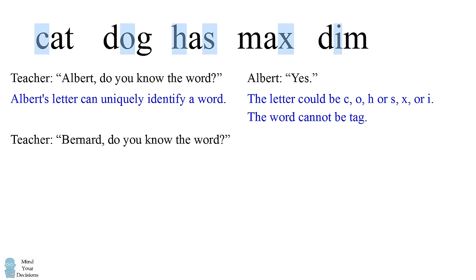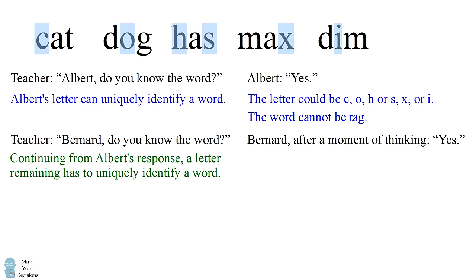The teacher then asks Bernard if he knows the word. Bernard, after a moment of thinking, also replies yes. So Bernard has heard Albert's answer and wants to continue the logic. So from this list of words and the letters that are remaining, Bernard would be able to uniquely identify which word they all had.